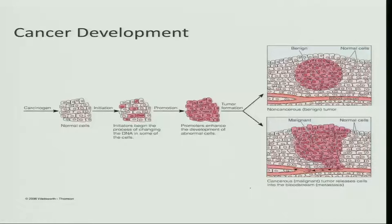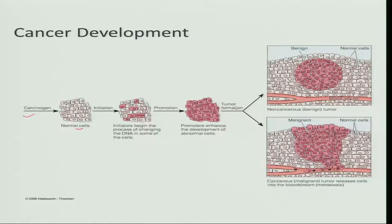You can see a carcinogen entering the body and entering into normal cells. There is an initiation of cell growth — new cells begin growing and uncontrolled multiplication occurs, slowly increasing in size until a tumor forms. If it is a benign tumor, it can be surgically removed with no problem. But if it is a malignant tumor, it keeps increasing in size, and can pass through the blood and spread to other parts of the body, damaging them.